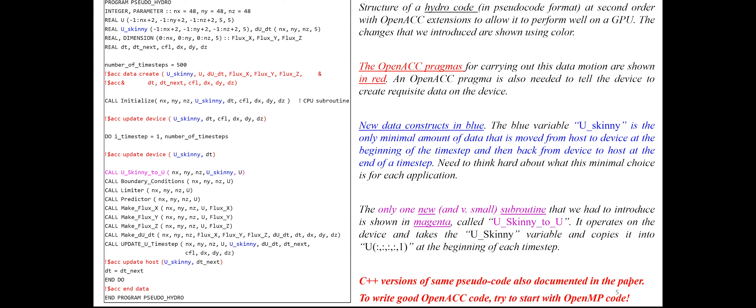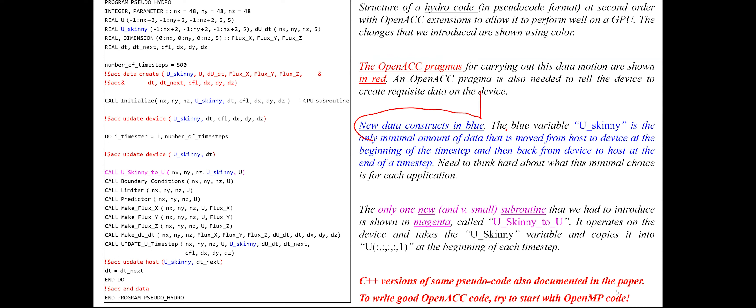A real hydrodynamics code would have multiple features including an MPI-based substrate for exchanging data across nodes — I'm not showing that because I'm showing the most basic type of hydrocode. In all the pseudocodes I will show, the OpenACC pragmas will always be shown in red. You'll see OpenACC pragmas ensuring pieces of data can be taken from CPU to GPU or created on the GPU. New data constructs, introduced in blue, declare a very small number of variables.